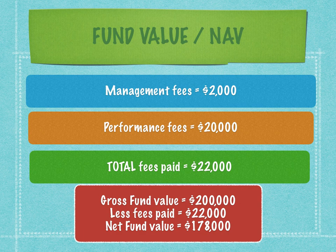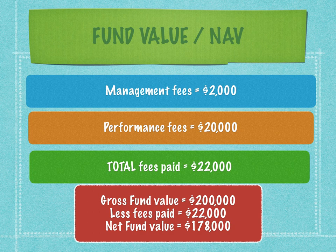The gross fund value was $200,000. Less the fees paid of $22,000, that leaves the investor with a net fund value of $178,000. This is how fund values are calculated — we take the gross value, subtract fees paid, and the remaining amount is the net fund value. Performance fees, unlike management fees, are not paid every year.